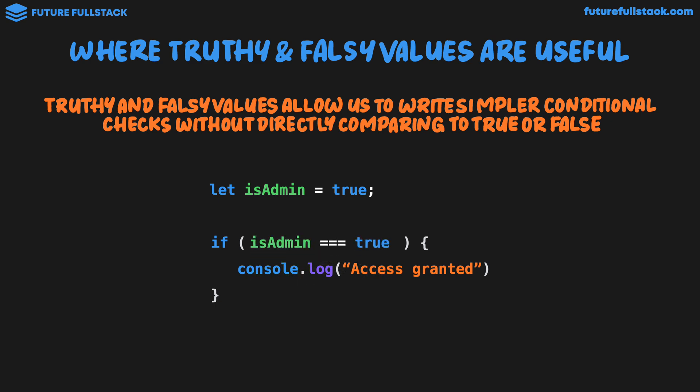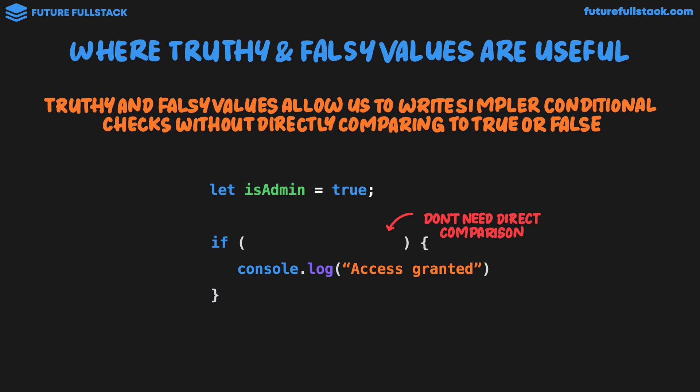But using truthy and falsy values, we can drastically simplify this. We don't need direct comparison — all we need to do is put in isAdmin. Because inside this boolean context, the value of isAdmin will be converted to a truthy or falsy value. The value of isAdmin is true, which is a truthy value, so the code block will run. Truthy and falsy values mean we don't need to directly compare to true or false inside an if statement. We can just evaluate the value directly inside the condition, and it will be converted to true or false depending on whether it is a truthy or falsy value.